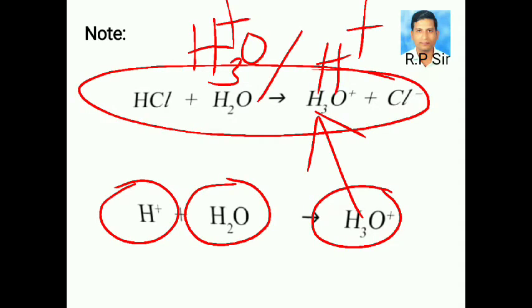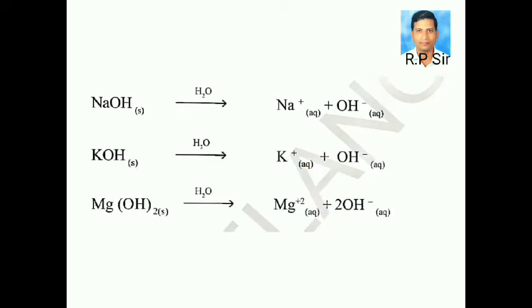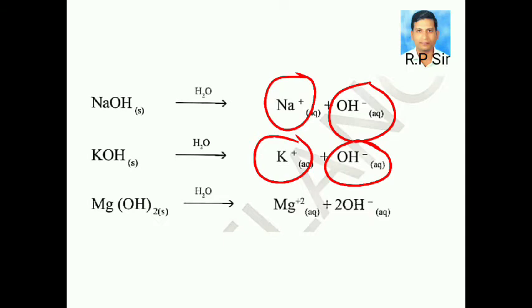Let us see what happens when a base is dissolved in water. Sodium hydroxide dissociates as Na+ and OH- ion, that is hydroxide ion. Potassium hydroxide dissociates in presence of water as K+ ion and hydroxide ion. Magnesium hydroxide dissociates in presence of water as Mg+2 and hydroxide ion. Bases which are soluble in water are called alkalis.